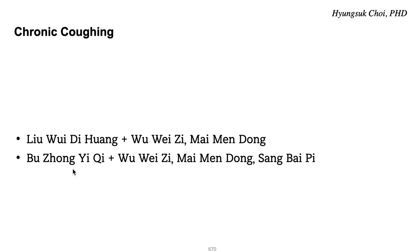But this version is for Yang deficiency and Qi deficiency: Bujong Ichi Tang with the same herbs — Uweiji, Maimendong, and Xiangbaipi. This formula is commonly used alongside Liu Wei Di Huang Wan and Mai Wei Di Huang Wan, because most patients go into a dryness pathology, but some patients develop into a Qi deficiency condition — in that case you can use Bujong Ichi Tang with Maimendong and Xiangbaipi.